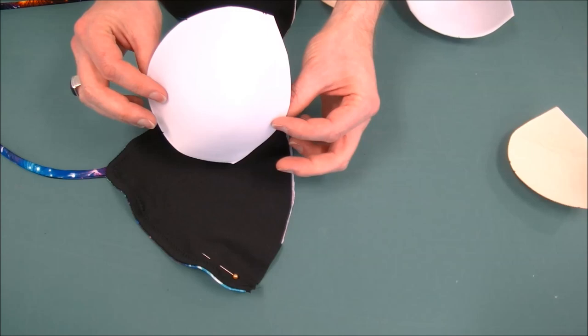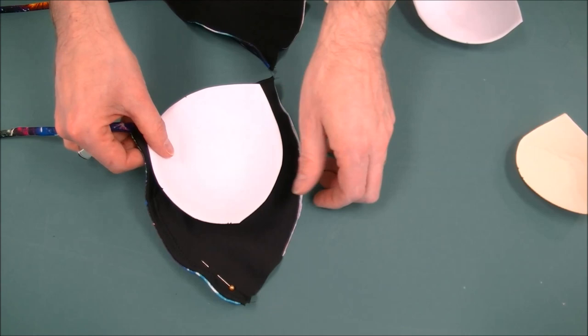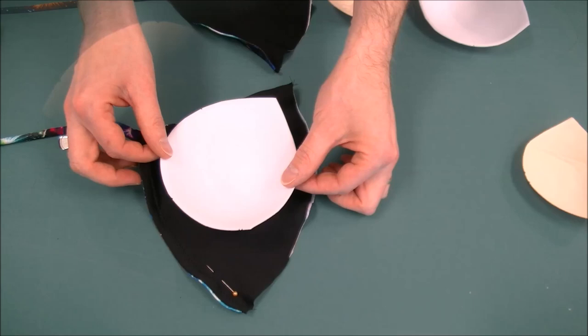If you purchase a molded bra cup and you find it's maybe a little bit big for your suit, as long as it's a laminated foam cup, you can always cut it down to size to make it fit the bathing suit. These can always be cut and adjusted.